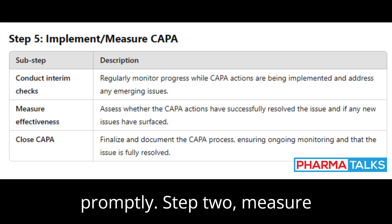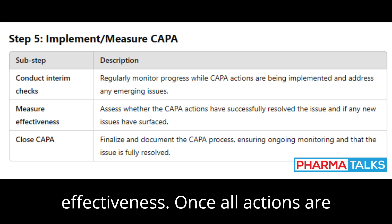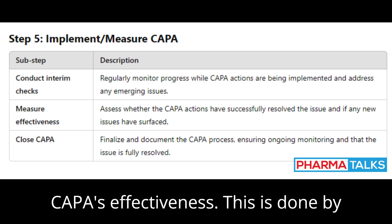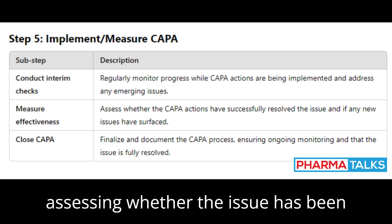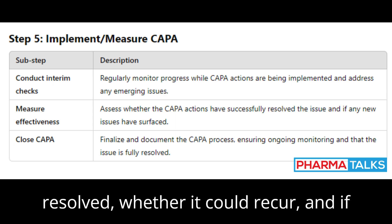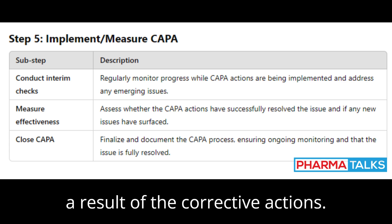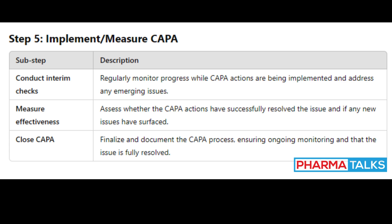Step 2: Measure Effectiveness. Once all actions are complete, the team must measure the CAPA's effectiveness. This is done by assessing whether the issue has been resolved, whether it could recur, and if any new problems have been introduced as a result of the corrective actions.